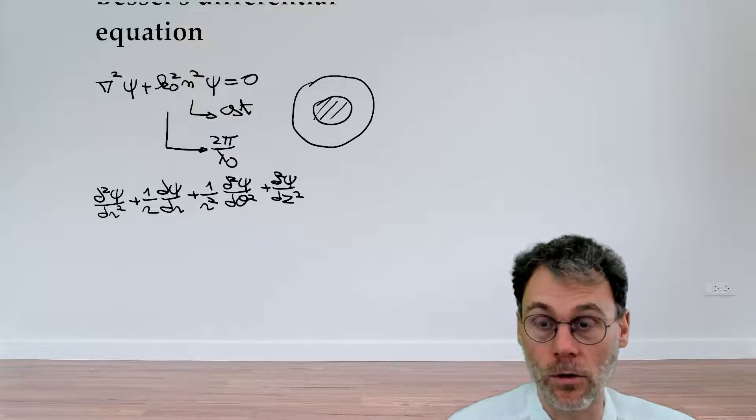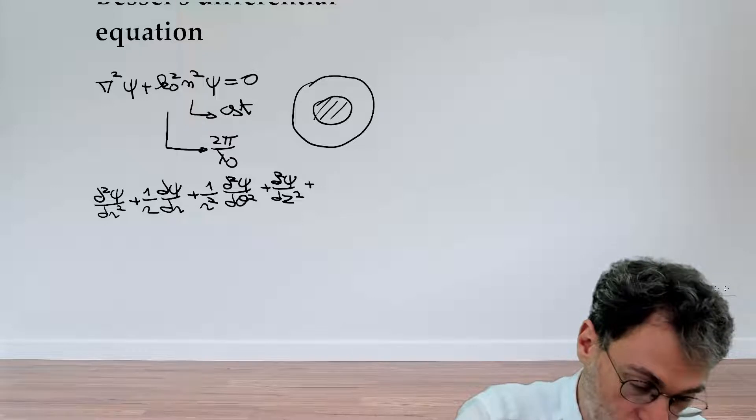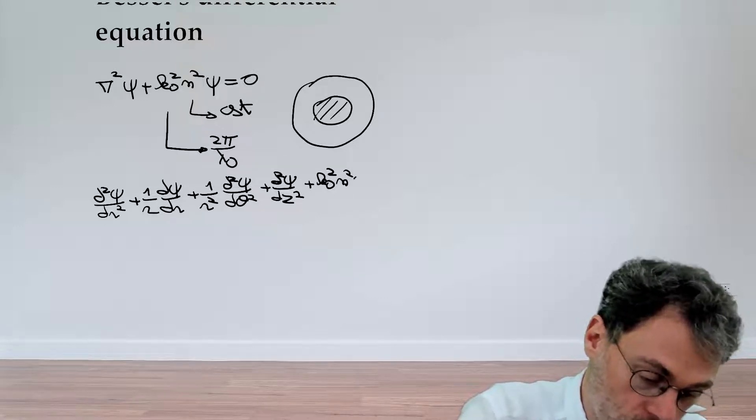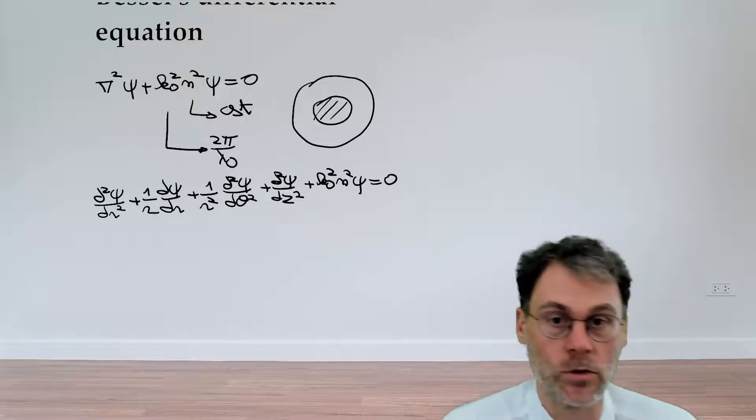And then d²ψ/dz². So that's our Laplacian, but let's not forget the final term: k₀²n²ψ equals zero.